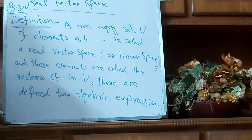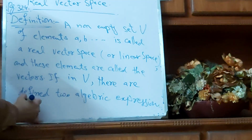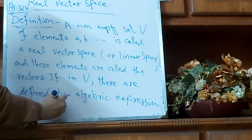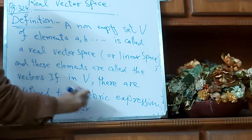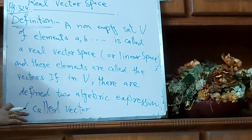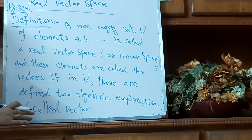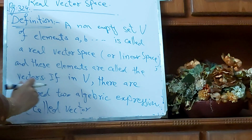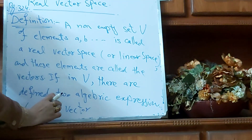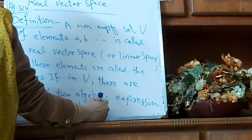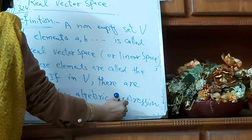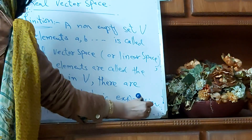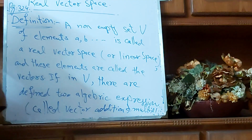Number one is called Vector Addition, and number two involves Scalar Multiplication. These are all the definitions you have in the book on page 324. The axioms need to be cleared — that is why we discuss them. The book has them written, but we will prove the axioms.